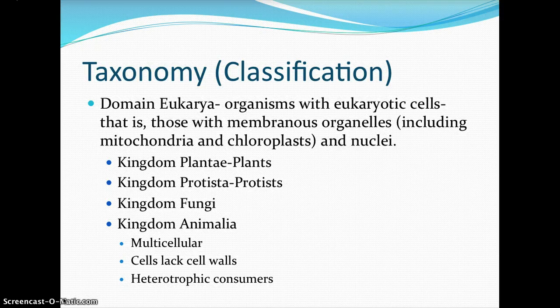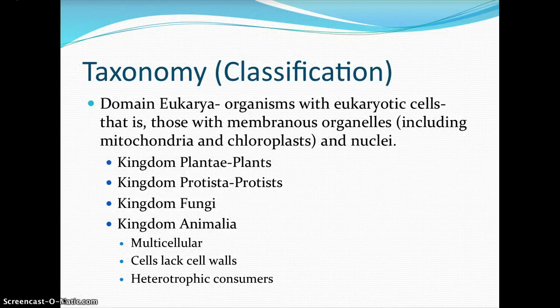For humans, our scientific name would be Homo sapiens. When we look at animals in general, we are in the Eukarya domain. There are only three domains; two belong to bacteria. In the eukaryotic domain, we have organisms with eukaryotic cells — those cells that have membranous organelles including the mitochondria and chloroplast, and a true nucleus, which is what eukaryon means: the true kernel or nucleus in which DNA is stored.